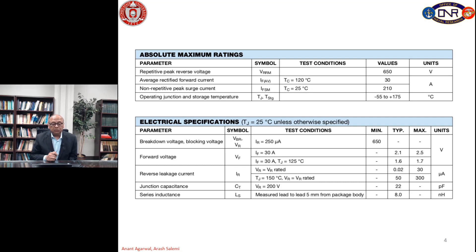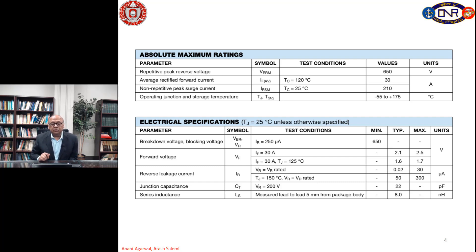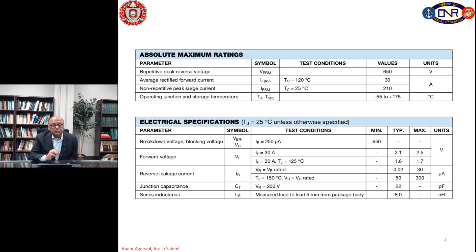You can have a very high surge current through the diode one time — that's 210 amps when the case temperature is 25 degrees C. That 210 amps is the maximum current this diode will take for a short time, and then the diode is going to blow up thermally. That's why it's non-repetitive. They recommend storing the diode between minus 55 to 175 degrees C. Then the next set of characteristics are the electrical specifications, starting with breakdown voltage.